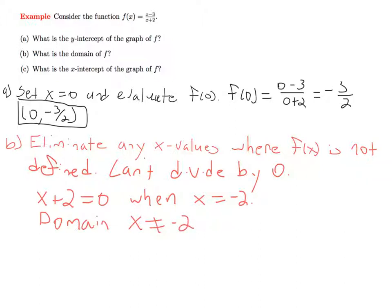So the domain is going to be x is not equal to minus 2. That's the only value we need to get rid of. And in interval notation, we could write this as minus infinity to minus 2 union minus 2 to positive infinity. So it's all values except for minus 2.